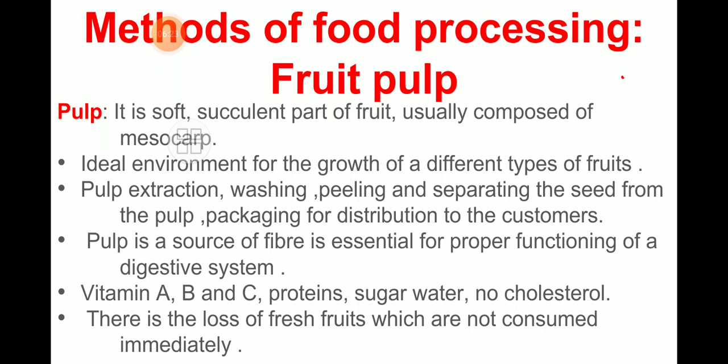We know that we are damaging more than forty percent of fruits — forty percent of fruits are damaged or not consumed by human beings immediately. To avoid that loss, we can use this type of methodology for food processing.